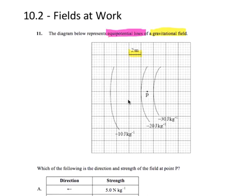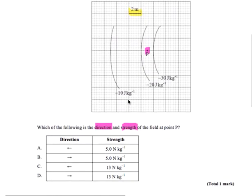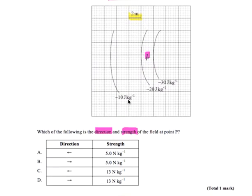We're asked a couple of things — specifically, the direction and strength of the field at point P. The strength is going to be easier to solve first, so let's start with that. We know that the field strength is the negative potential gradient, so it's the change in potential with distance.